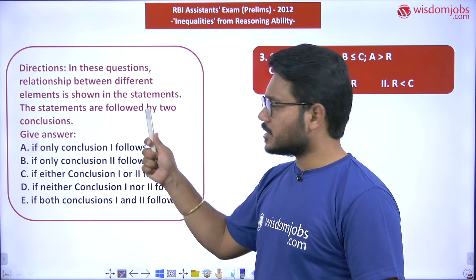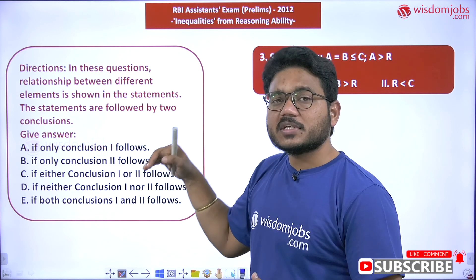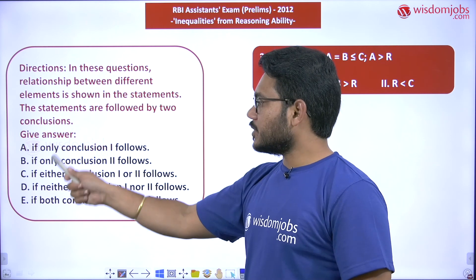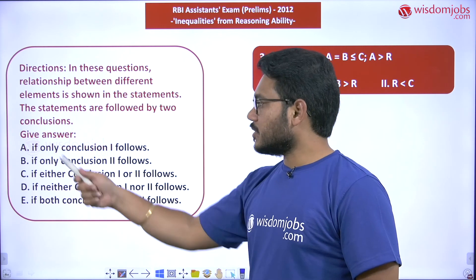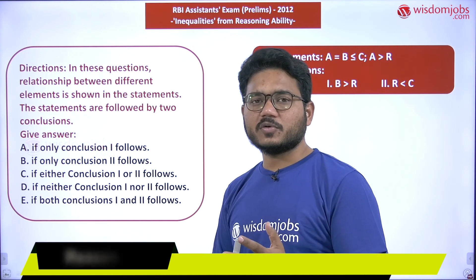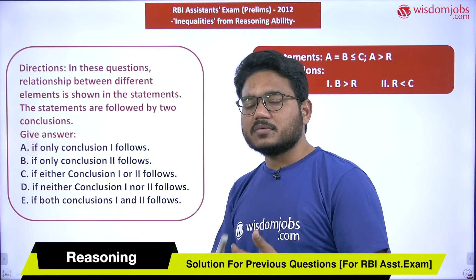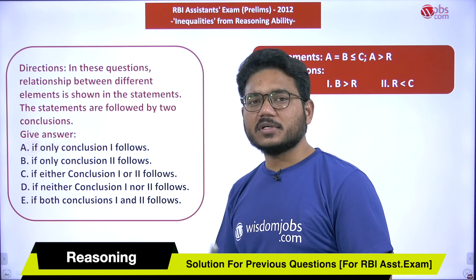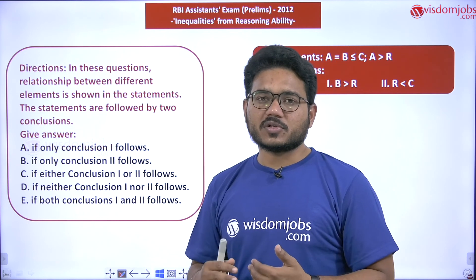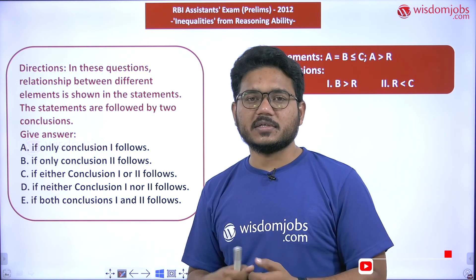The directions for this problem: some statements and conclusions are given, and we need to check whether those conclusions follow the given statements or not, then choose the appropriate option. Generally, if one conclusion follows, the option reflects that; if both conclusions follow, there is a separate option. There is also an important 'either-or' case that must be checked whenever applicable.